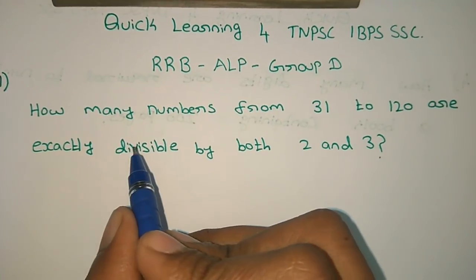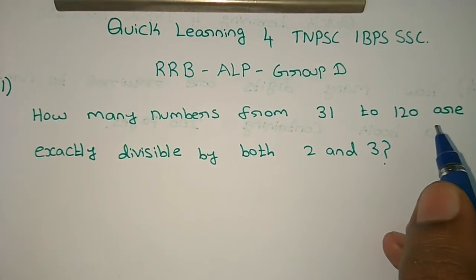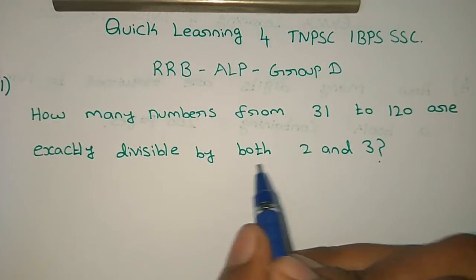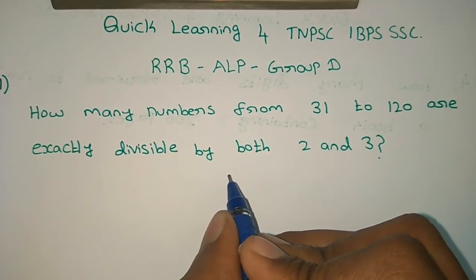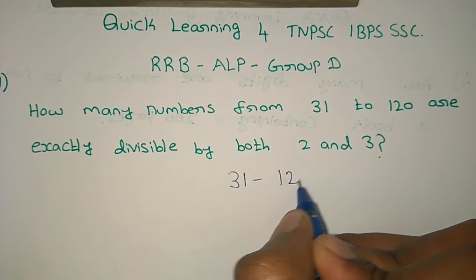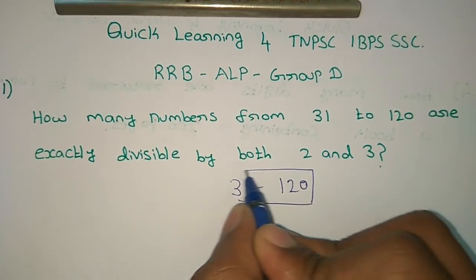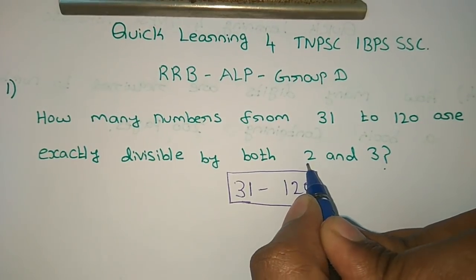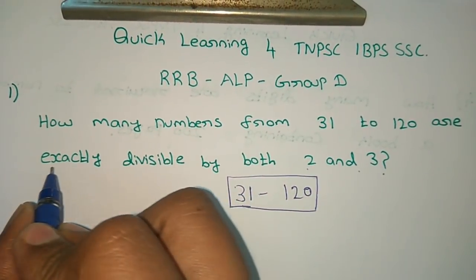How many numbers from 31 to 120 are exactly divisible by both 2 and 3?